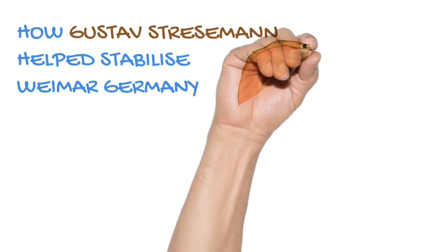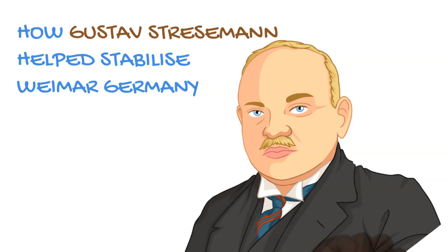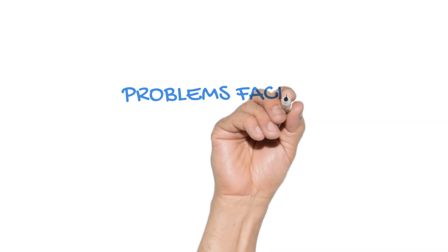Welcome to Drawn in 60 Seconds, where I give you a rapid run-through of a topic in history. Today I'm going to explain a little about how Gustav Stresemann, Chancellor and then Minister for Foreign Affairs, helped stabilise Weimar Germany in the years 1923 to 1929.